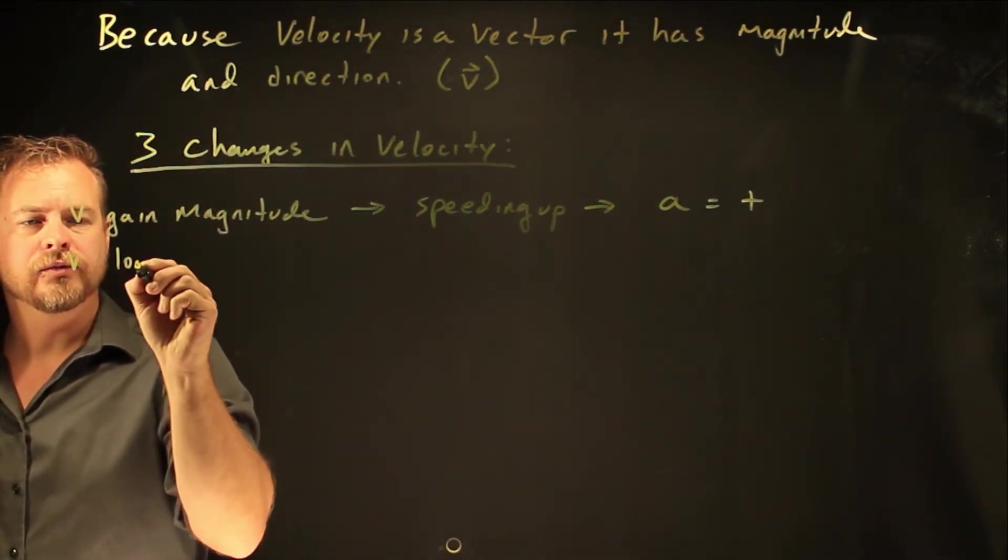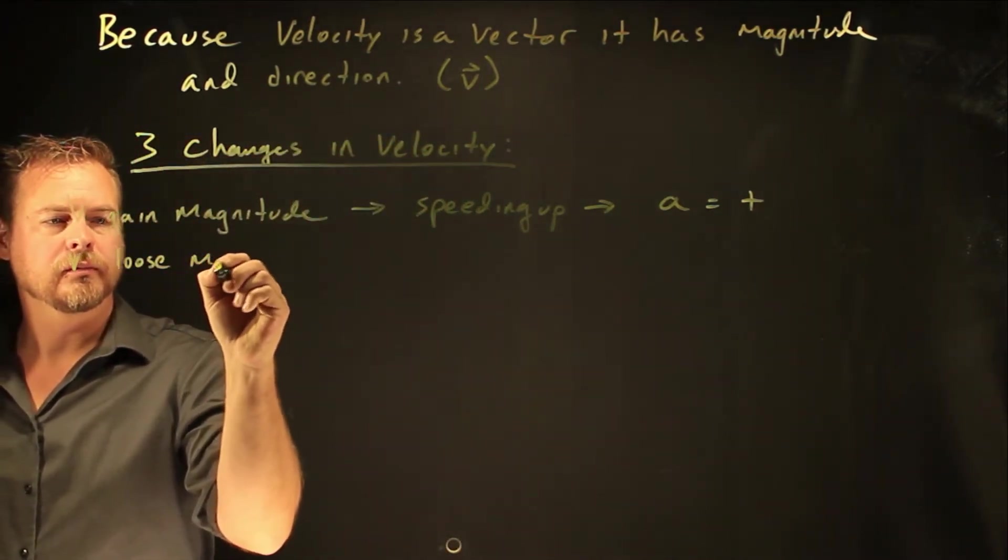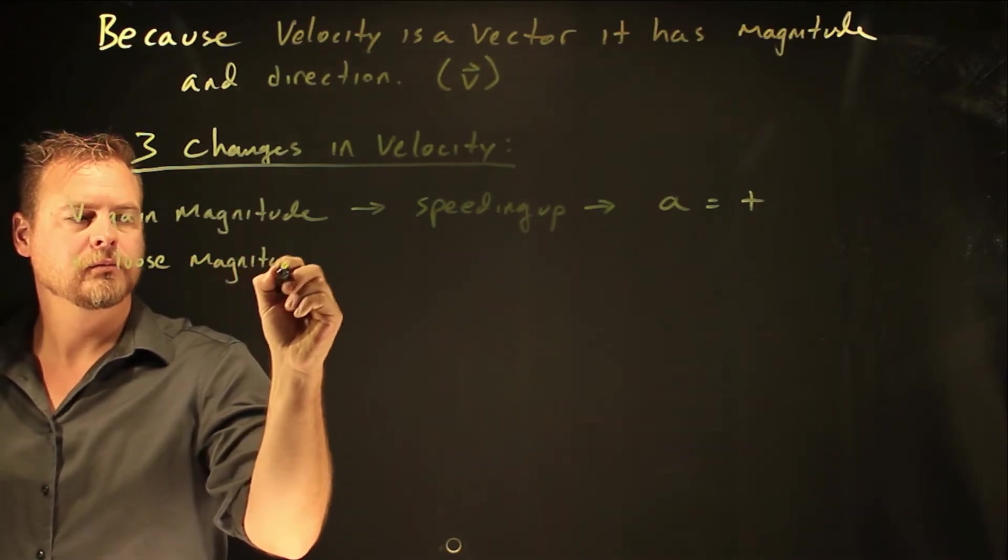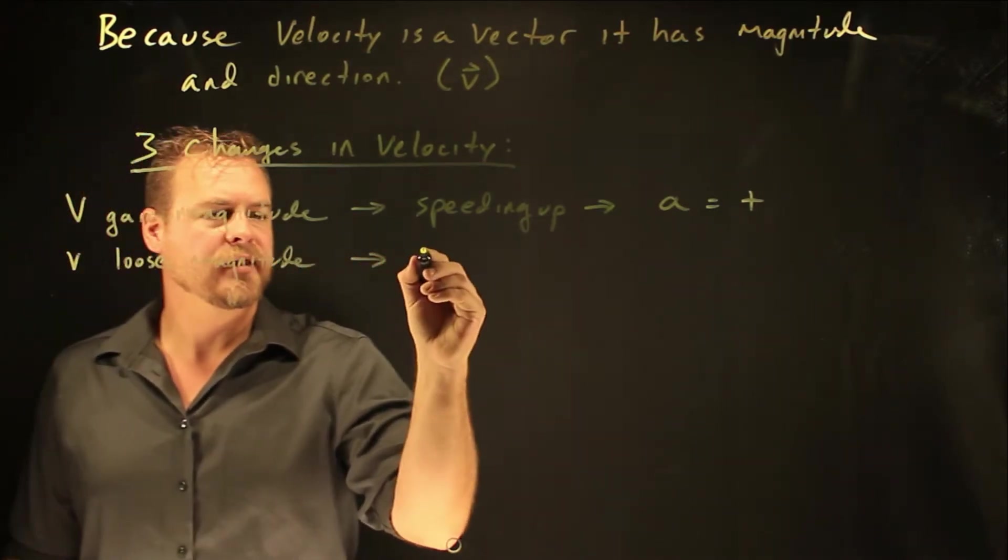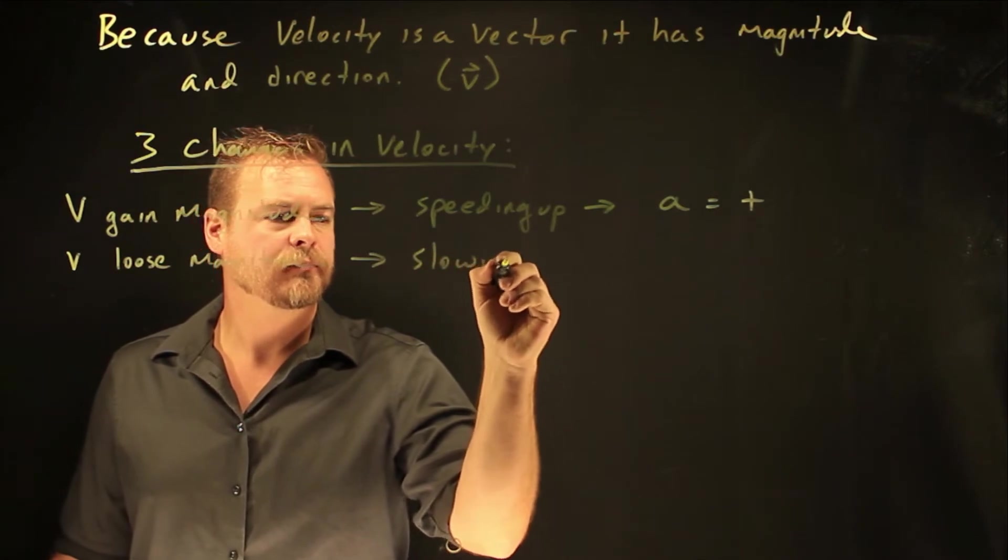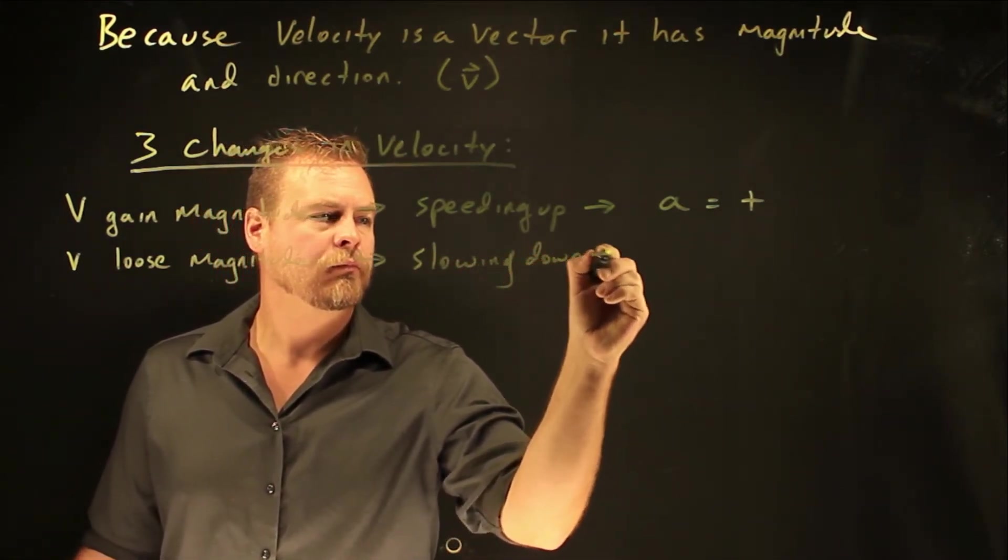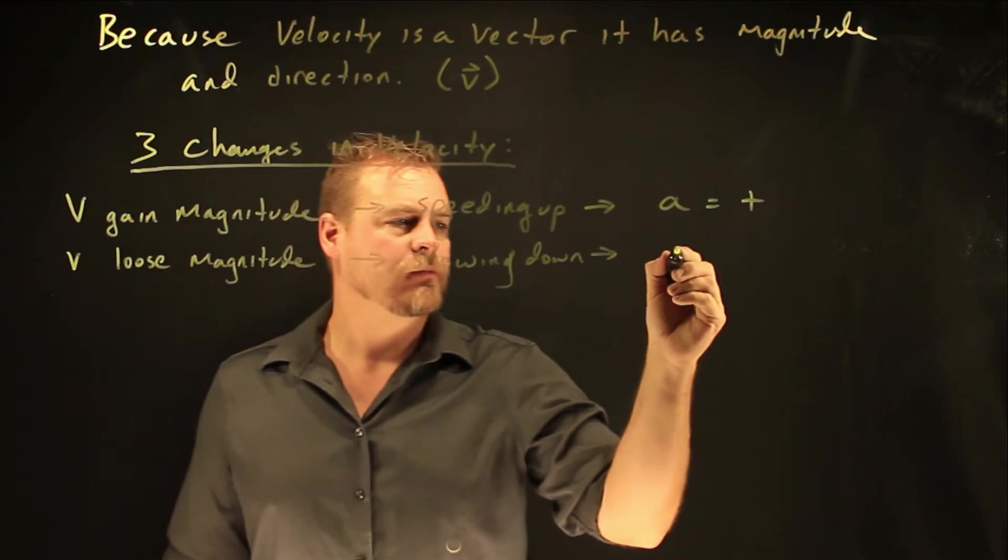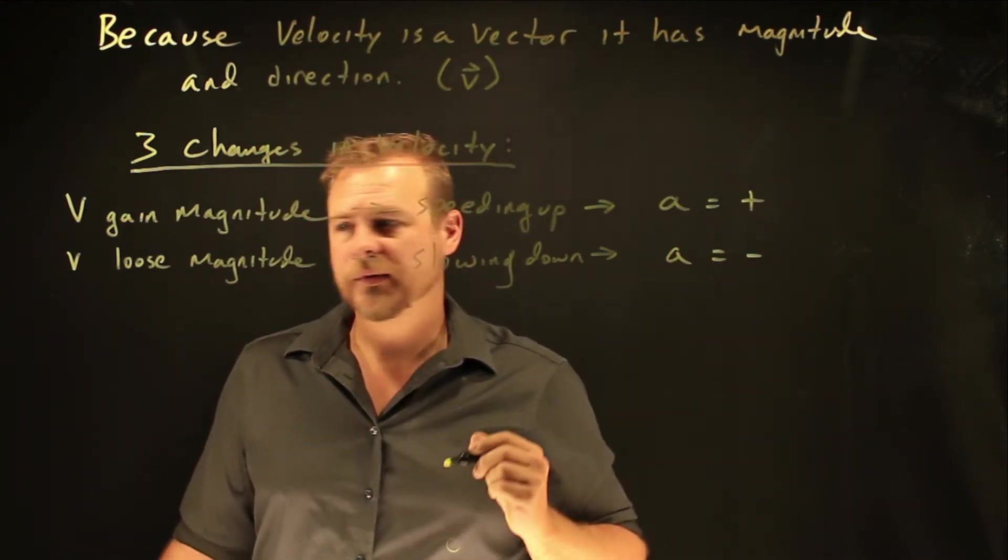V can lose magnitude. We would say that it's slowing down. And if it was slowing down, a would be negative.